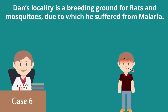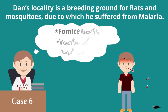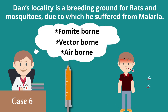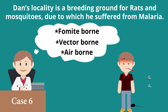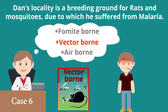Dan's locality is a breeding ground for rats and mosquitoes, due to which he suffered from malaria — identify the type of the disease. Malaria spreads through flies, hence it is a vector-borne disease.